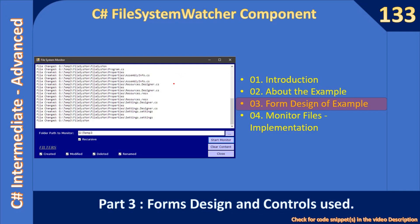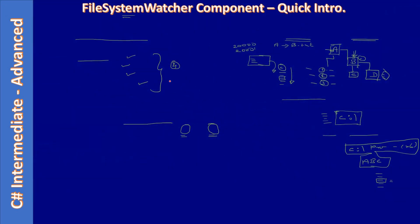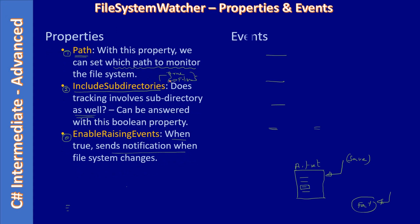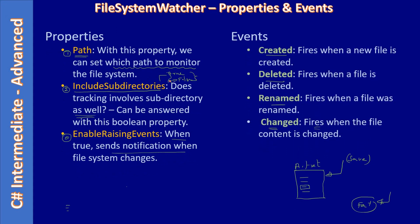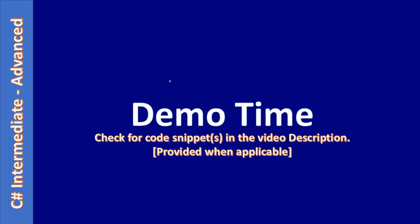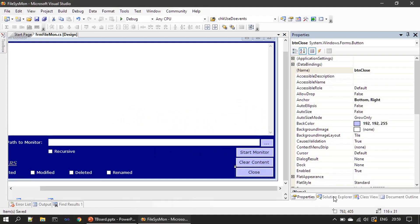Hello friends, welcome to the C# intermediate to advanced tutorial. You are watching part 3 of the subseries on the FileSystemWatcher component. In this video we will talk about the set of controls and their properties — that means we will discuss the form design of this sample. These are the slide decks from the previous two parts. In the previous video we talked about the example we are going to create in this and the next video.